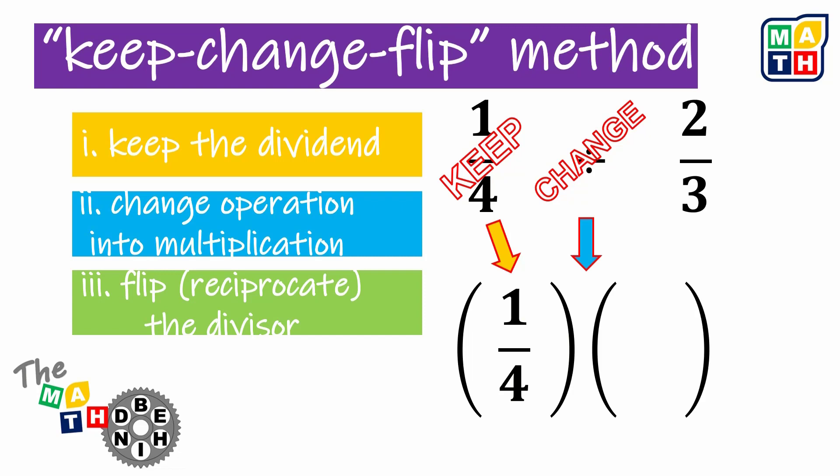And finally, we are going to flip or reciprocate the divisor. So instead of 2 thirds, we are going to interchange the values in the numerator and denominator. And the value is instead of 2 thirds, we'll get 3 halves.